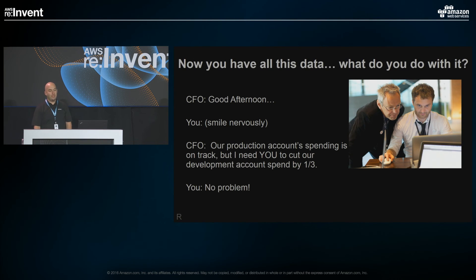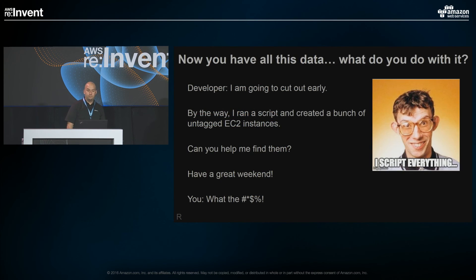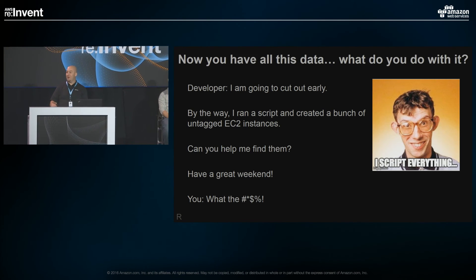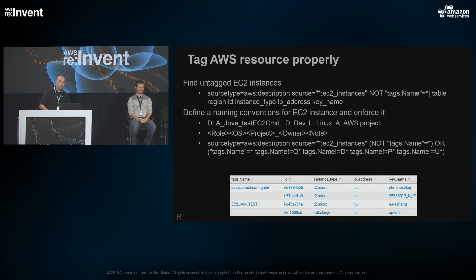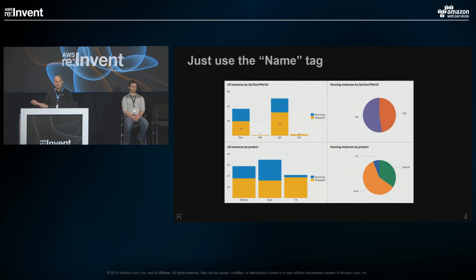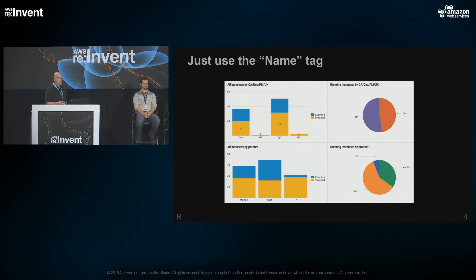Here's another scenario: the CFO asks you to reduce spend. We find that a lot of engineers leave their machines running over the weekend because it's easier than starting them back up. Internally, we saved 40% of the spend in our development accounts just by shutting things down on the weekends. It's also really easy to go into Splunk, search for untagged EC2 instances, and pivot the data to create nice dashboards showing instances with no tag name — so you can actually see this stuff visually.